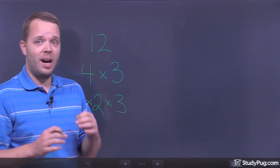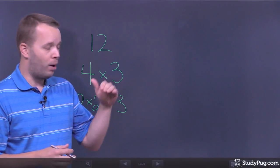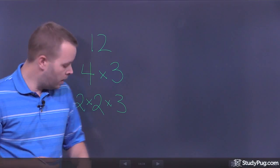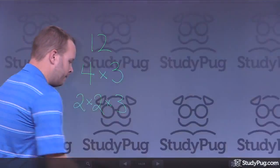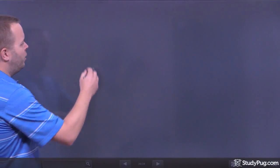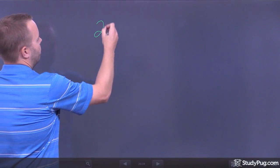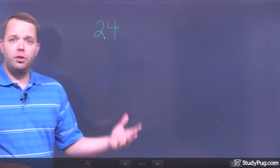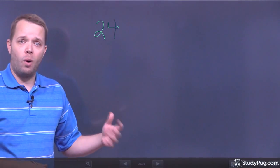But what I'm going to show you is a couple methods you can use to break numbers down into products of their primes. The first one is the most common one, and that's using the factor tree method. So, imagine I have the number 24.